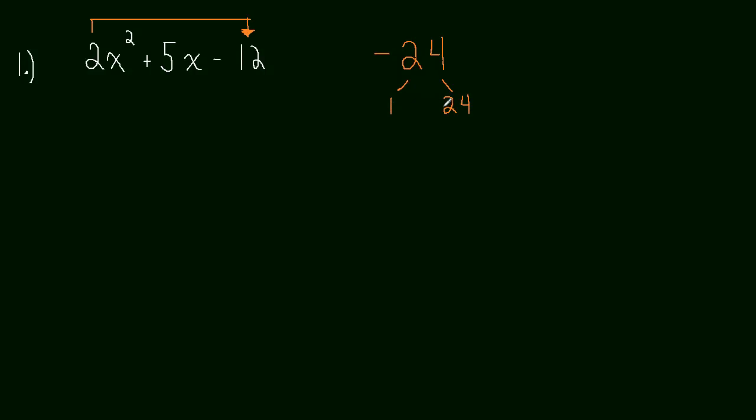1 and negative 24, negative 1 and 24, 2 and negative 12, negative 2 and 12, 3 and negative 8, negative 3 and 8, 4 and negative 6, and negative 4 and 6. Okay so we've listed all the possible combinations that multiply to get negative 24.